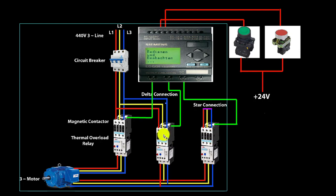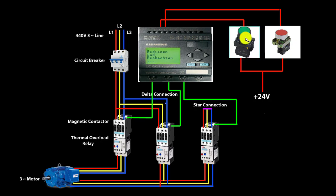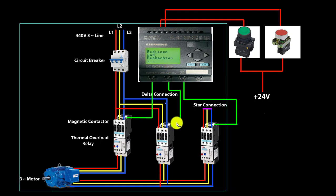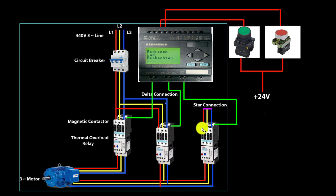So we have to turn the star connection and the delta connection. Once the circuit breaker is on and we turn the switch on, the main magnetic contactor and the star connection start. The connection switches automatically, and we are working in this mode. After we turn the motor to star connection, we automatically set our program timer for 5 minutes or 2 minutes to start the delta magnetic contactor.